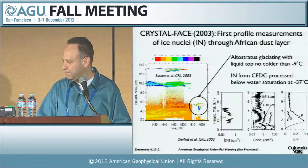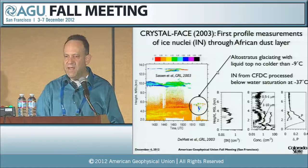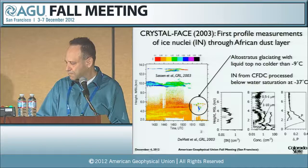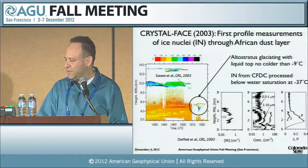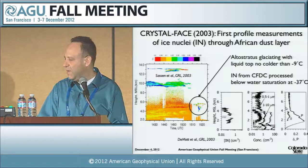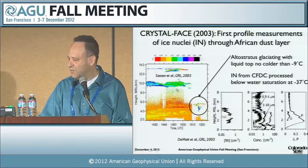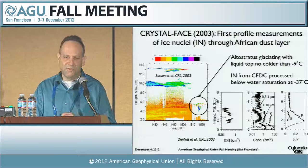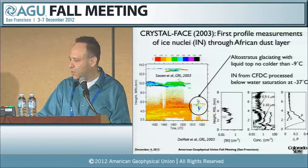The very first measurements we ever made on aircraft through an African aerosol layer was back in the Crystal Face experiment in 2003, in a series of papers with Ken Sasson. He was using his LIDAR on the ground in Florida, where you can see the dust layer in yellowish-orange colors. In the same location as we passed through the layer, we measured elevated hundreds to nearly a thousand per liter ice nuclei in association with very large aerosol particles and a stronger depolarization indicating dust aerosols. A cloud passed over his LIDAR and he saw that this cloud — with a top of only about minus 9 degrees — was glaciating, looking almost like a cirrus cloud.